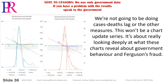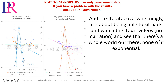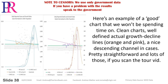It's about really looking deeply at what these charts reveal about government behaviour and Ferguson's fraud. And I reiterate, overwhelmingly, it's about being able to sit back and watch the tour videos — no narration — and see that there's a whole world out there, none of it exponential. Here's an example of a good chart that we won't be spending time on: clean charts, well-defined actual growth decline lines — orange and pink — a nice descending channeling cases, pretty straightforward, and lots of those if you scan the tour video.